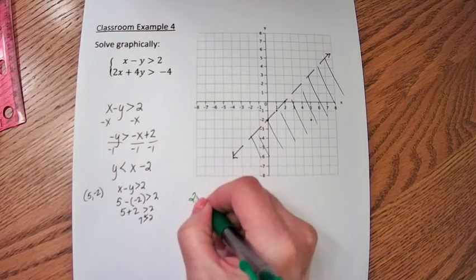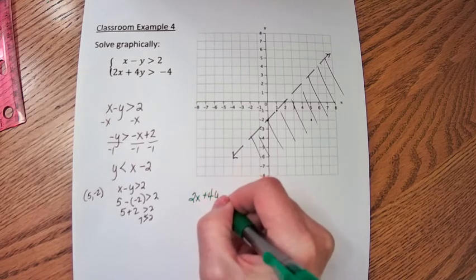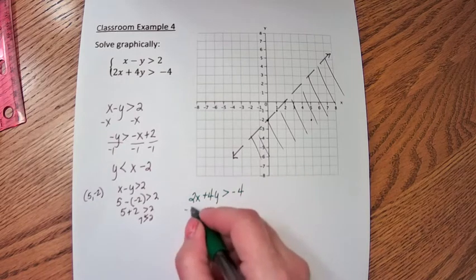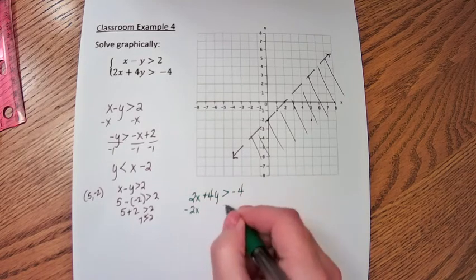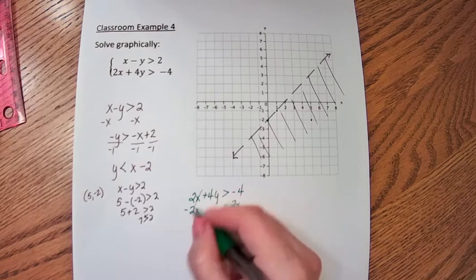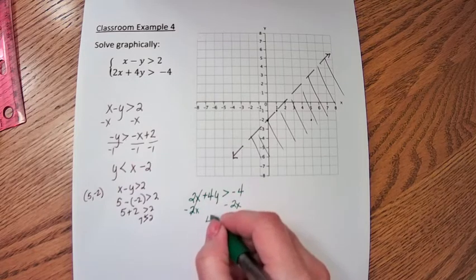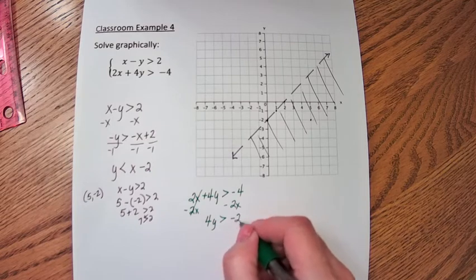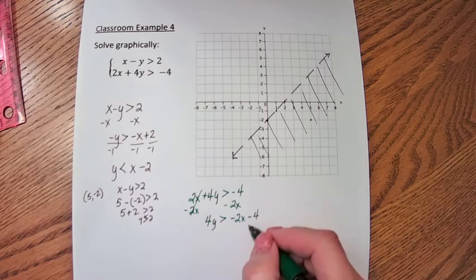Now let's look at the other equation. We'll do that one in green. That's 2x plus 4y is greater than negative 4. Once again we want to get the y by itself. So we'll subtract 2x from both sides.